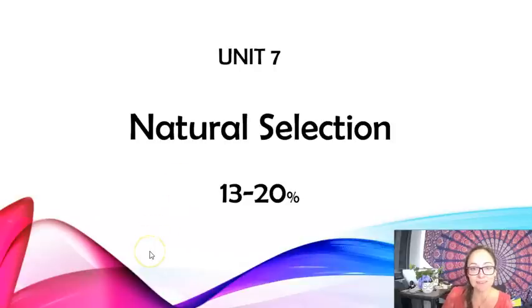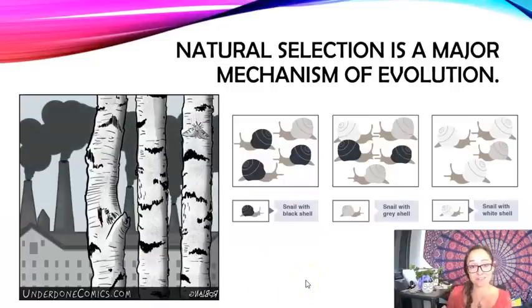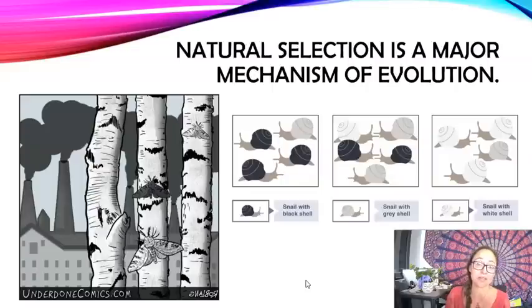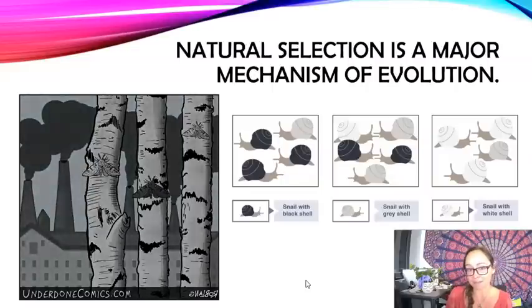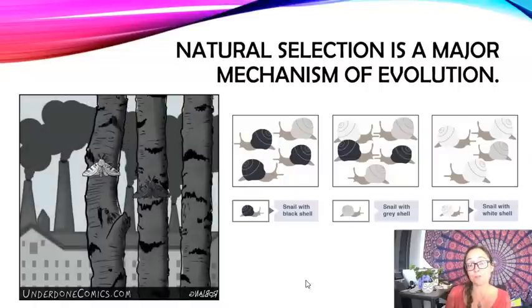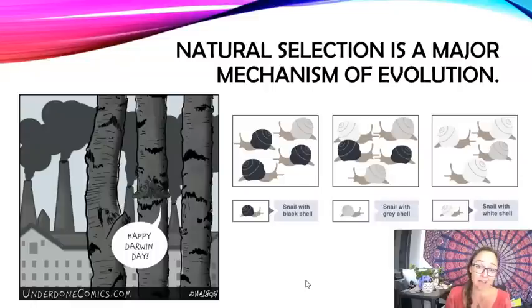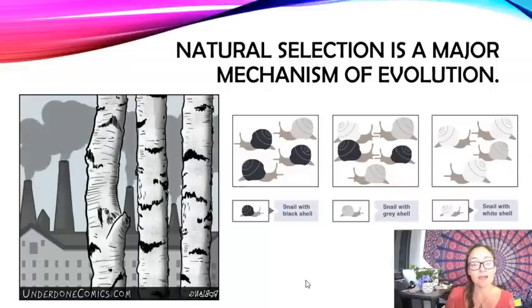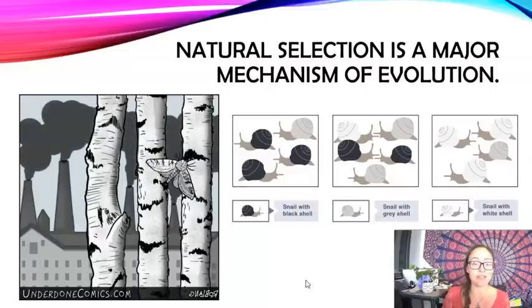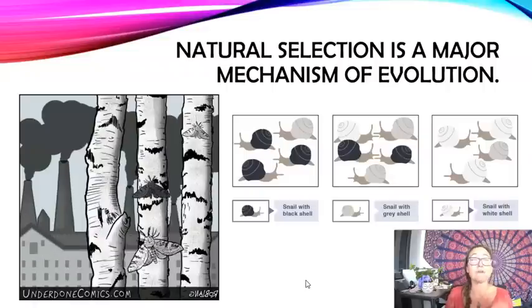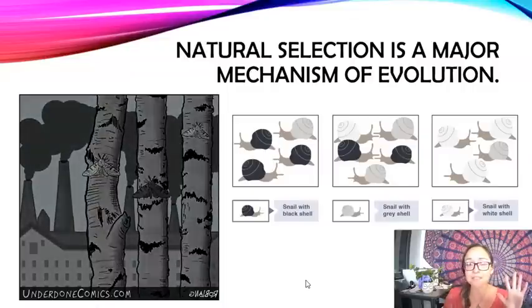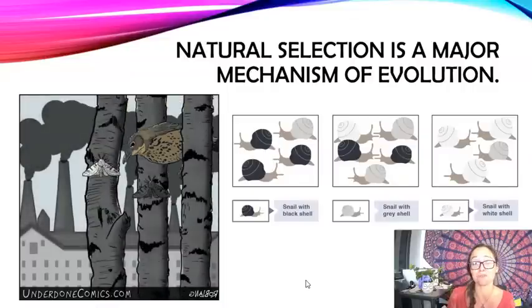This video is for Unit 7, Natural Selection. The first essential knowledge is that natural selection is a major mechanism of evolution. Evolution is defined as a change in allele frequencies over time — that's microevolution. There are five different mechanisms by which populations evolve, and natural selection is one of the major ones.